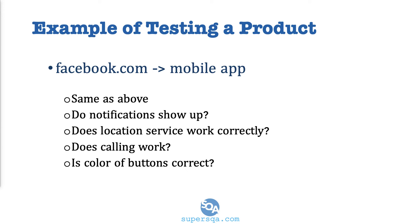But in addition to that, the mobile app has its own properties. For example, notifications — you might want to test: do notifications show up, do they look right, is the spelling right, is the message right? There are different types of notifications, so you have to test every single type. Location services are way more important on mobile than on the web app. Does the location service work correctly? Does calling from the app work correctly? Is the color, font, shape, and size correct? Those are the types of things you test on the mobile app — for Facebook or for any app, really.